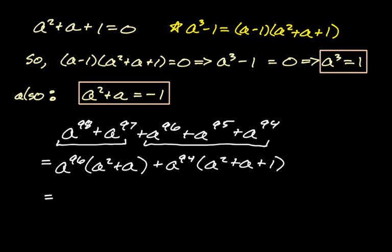A to the 96th is by properties of exponents, it's a cubed raised to the 32nd power, right? Because of power to power, you multiply the exponents. And then we know that a squared plus a from this box is negative one.